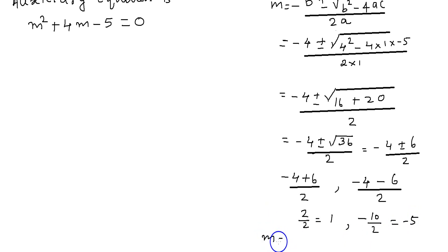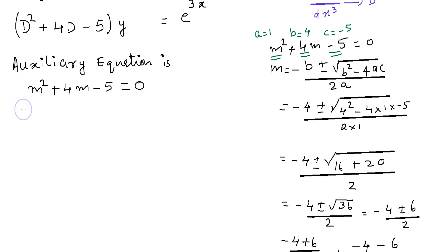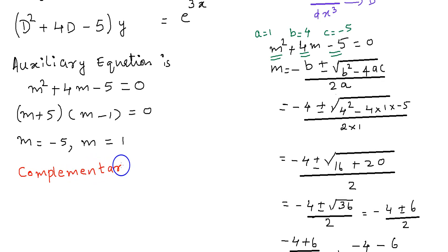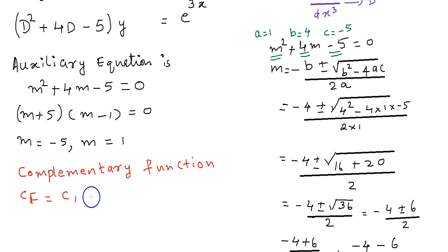So we get the roots as m equal to 1 and m equal to minus 5. Therefore, m squared plus 4m minus 5 is factored as m plus 5 into m minus 1 equal to 0, giving roots minus 5 and 1. Here we have real and distinct roots, m equal to minus 5 and m equal to 1. To find the complementary function, we use the formula c1 e raised to m1 x plus c2 e raised to m2 x.